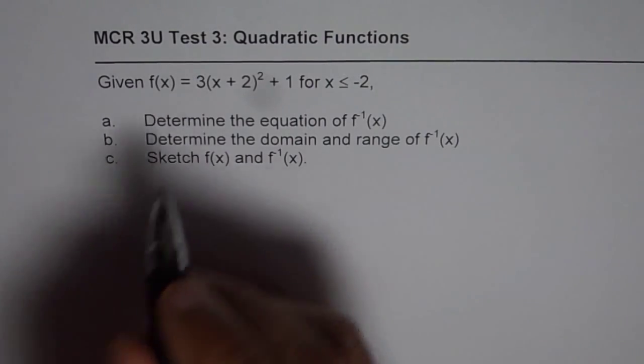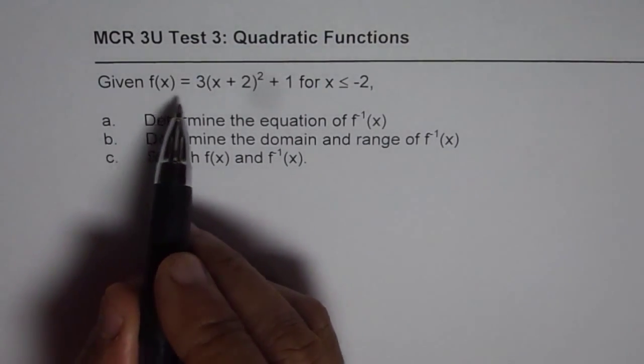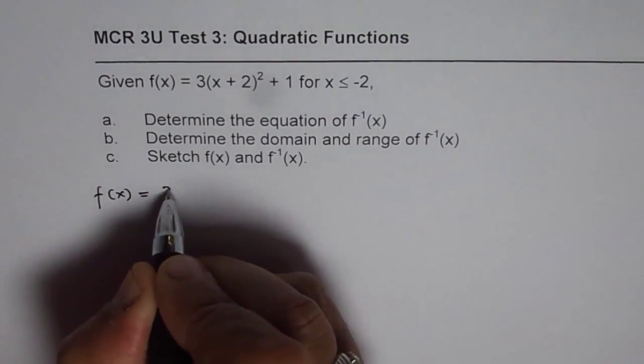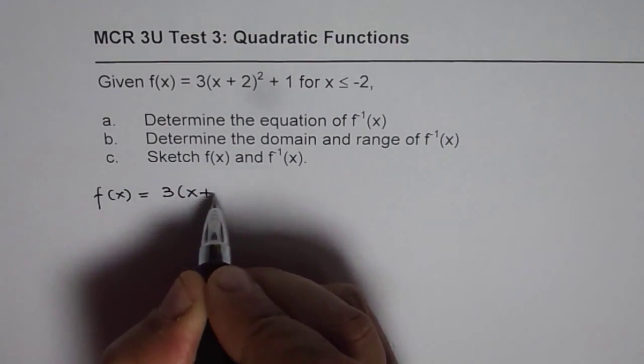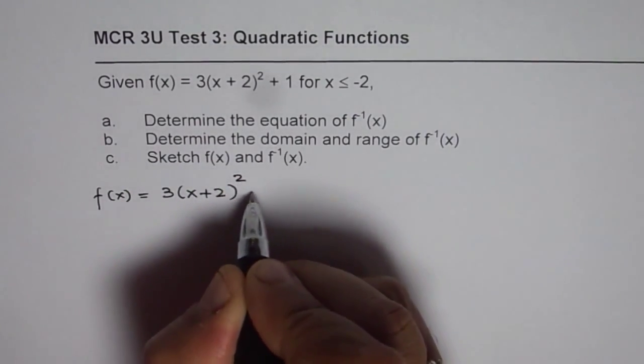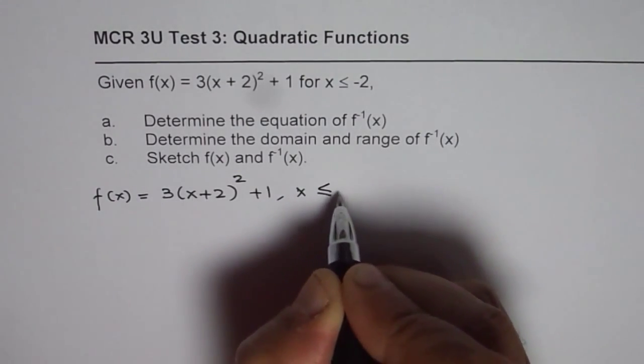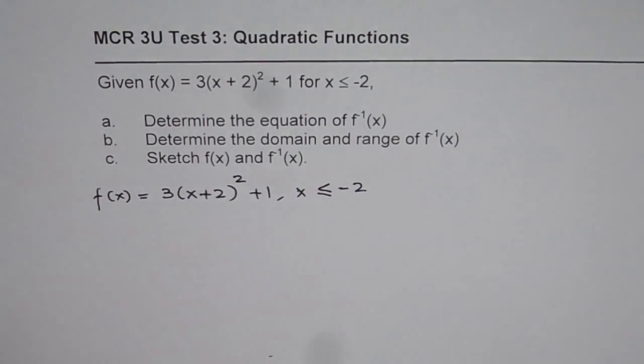What we're given here is a quadratic function in vertex form. So let me rewrite the function, which is f(x) = 3(x + 2)² + 1. An important thing here is that the domain is restricted and it is less than minus 2.